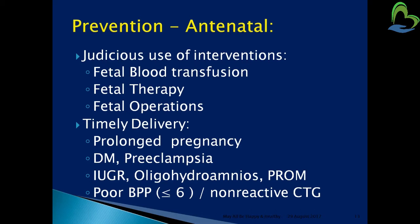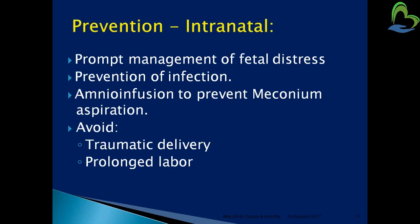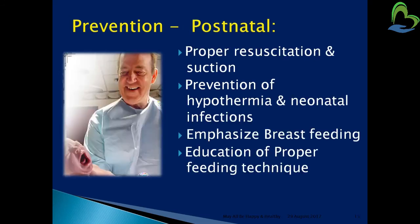Intranatal prevention includes prompt management of fetal distress, prevention of infection, amnioinfusion to prevent meconium aspiration, avoiding traumatic delivery methods such as forceps or vacuum delivery, and managing prolonged labor. Postnatal measures include proper resuscitation and suctioning of the baby, prevention of hypothermia by maintaining room temperature, and prevention of neonatal infection.